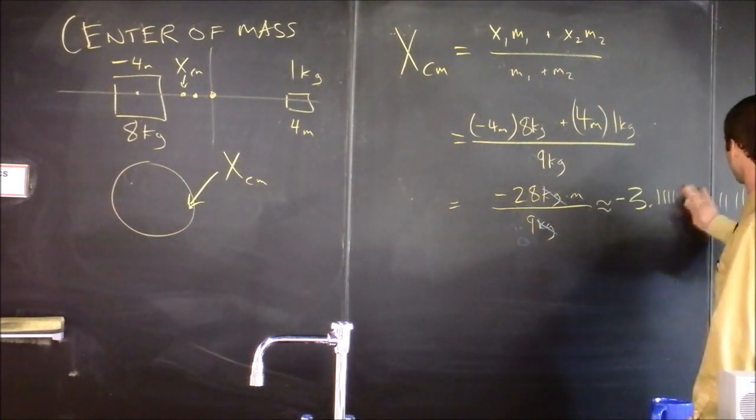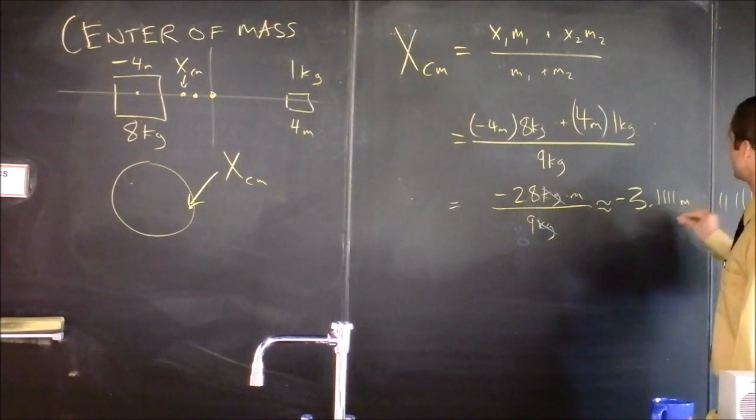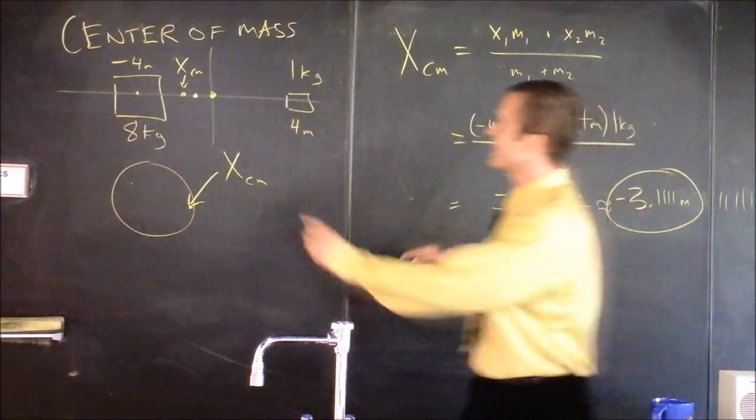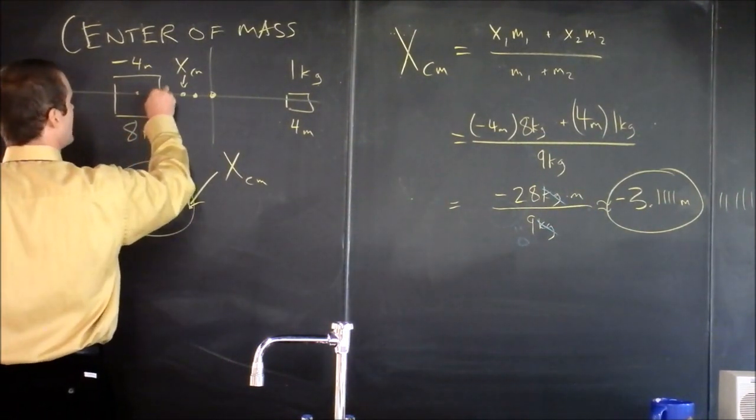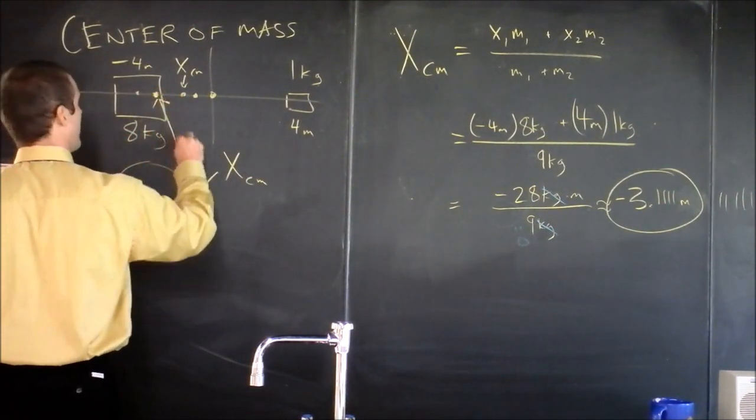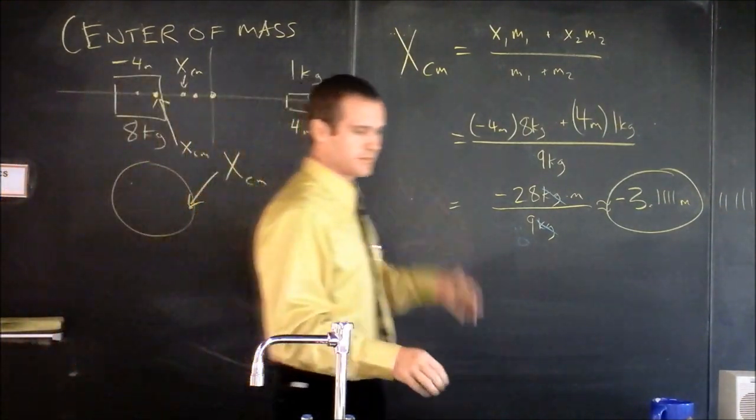You can't see it because I have too many ones there. This is the position of the center of mass. It says that the position is not quite at negative 4, but the position is right here at negative 3 and 1 ninth. That's where the center of mass is for this simple system.